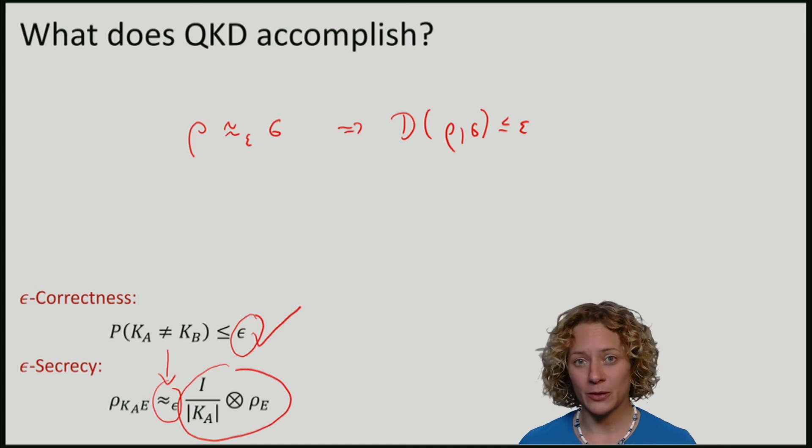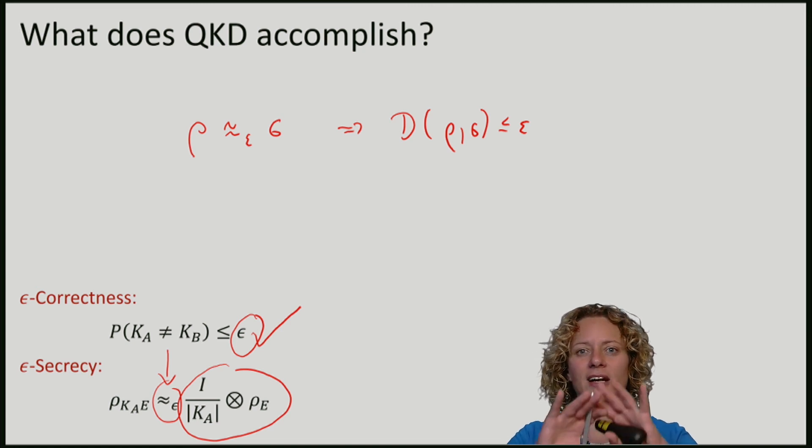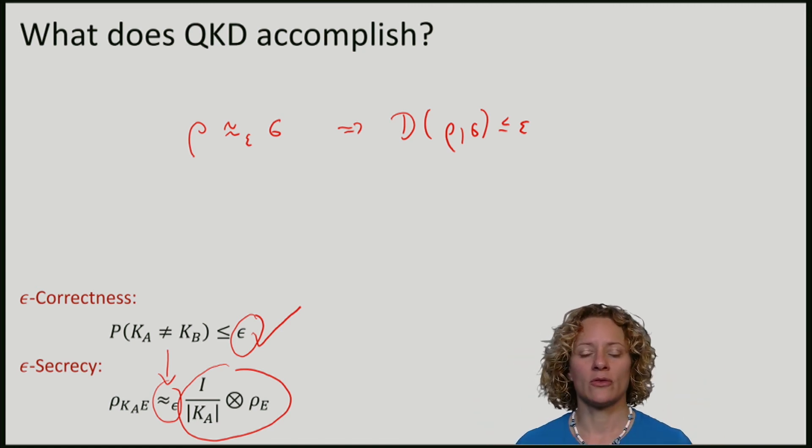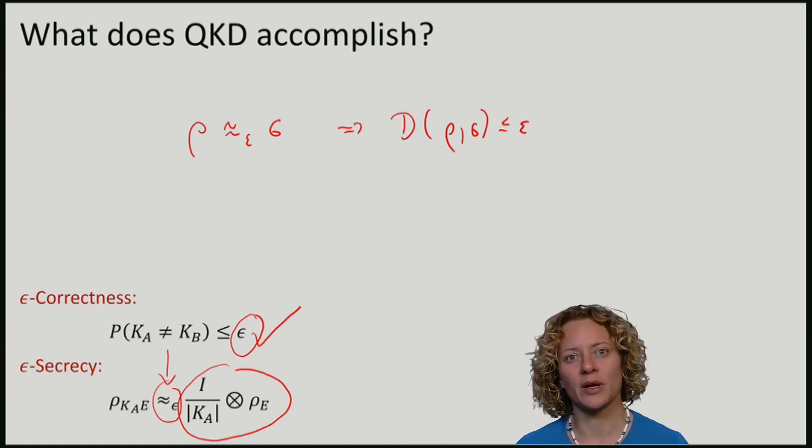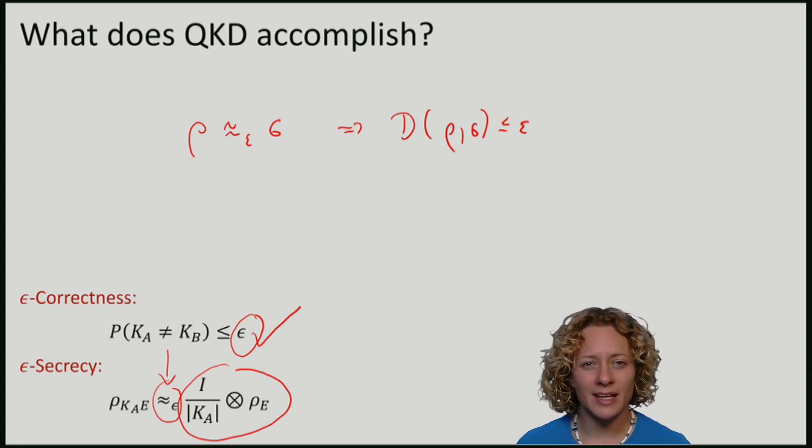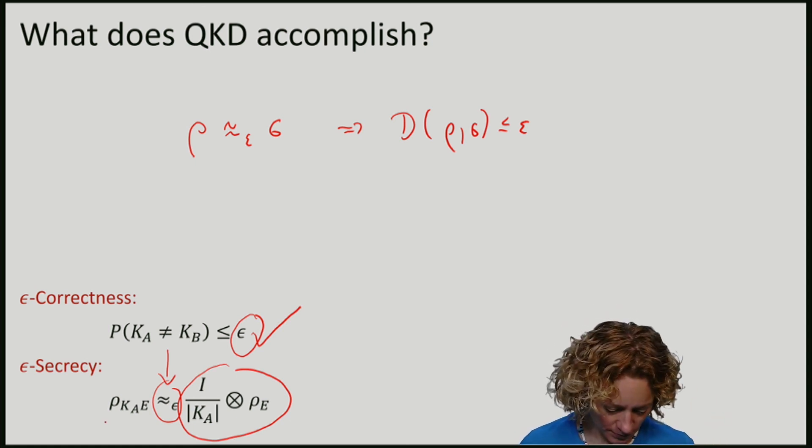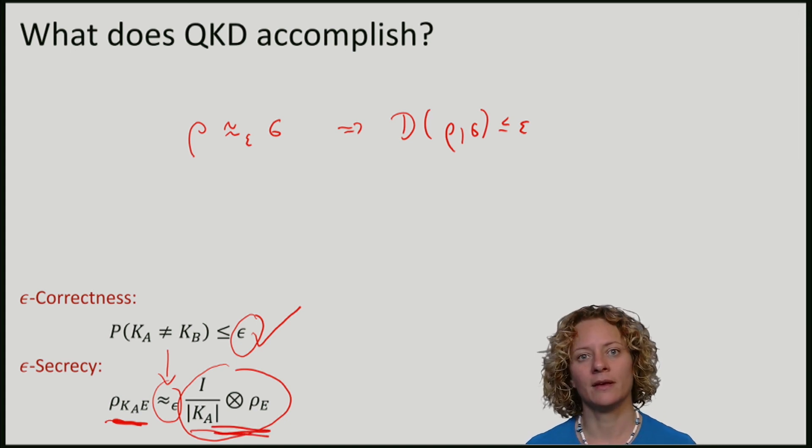In particular, it means that if we were to use a key inside a larger protocol, for example, in a one-time pad encryption scheme that uses the key produced by quantum key distribution, the resulting protocol will hardly see any difference whether we use the real state or the ideal state, where Eve is completely ignorant.